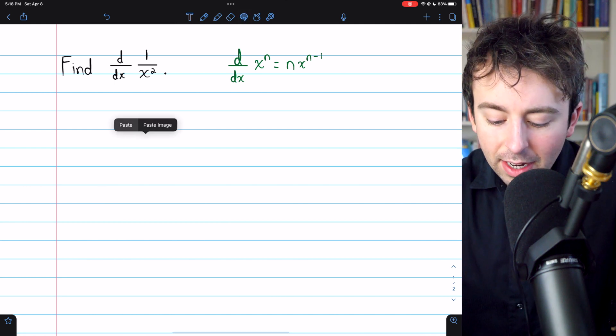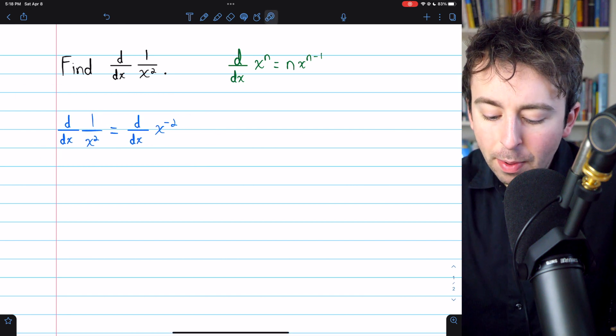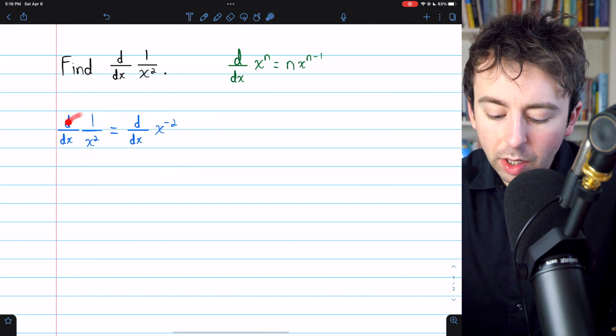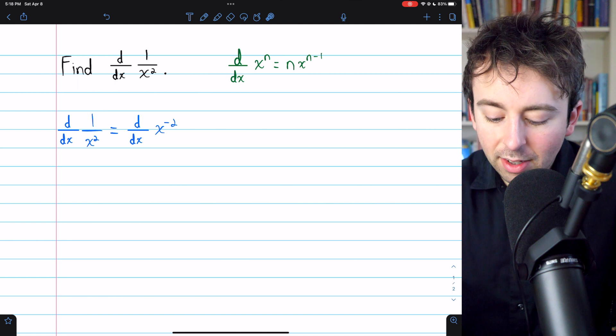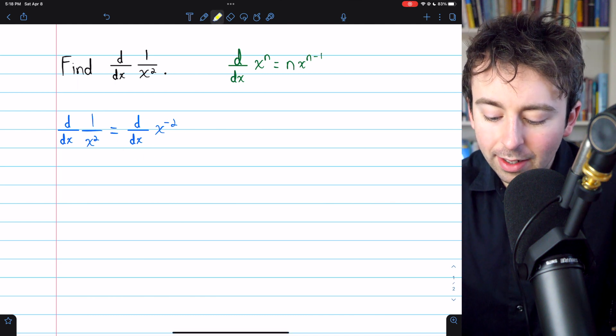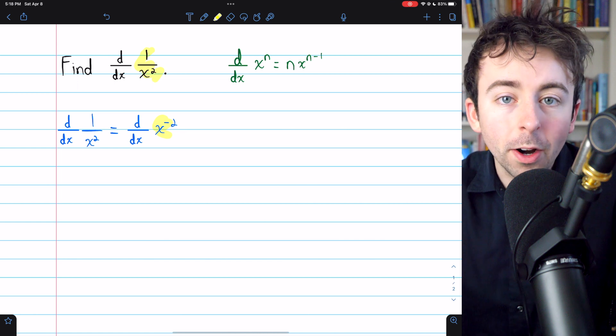When we have x in the denominator, we can rewrite it as a negative power, like so. The derivative of 1 over x squared is the same as the derivative of x to the negative second, since these things are the same.